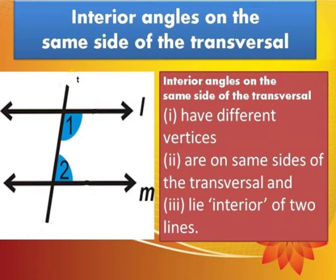Next, interior angles on the same side of the transversal have different vertices, lie on the same side of the transversal, and both lie interior to the two lines. In this figure, angle 1 and angle 2 are the pair of interior angles on the same side of the transversal, having different vertices, lying on the same side of the transversal, and both lying interior to lines L and M.